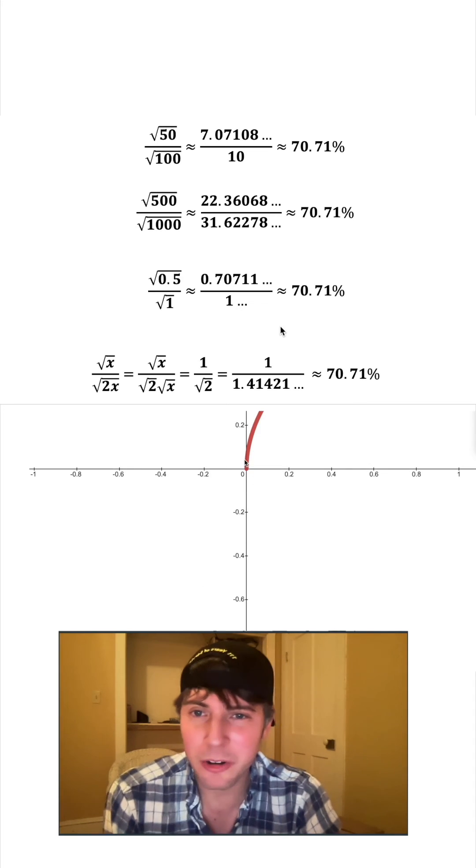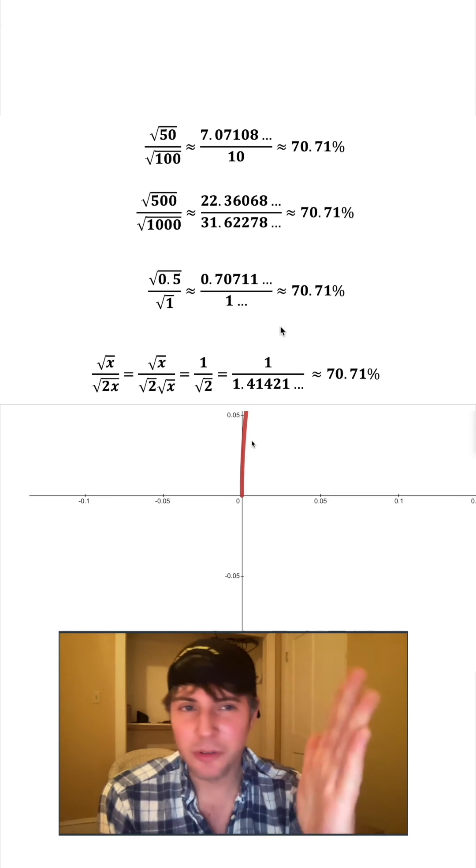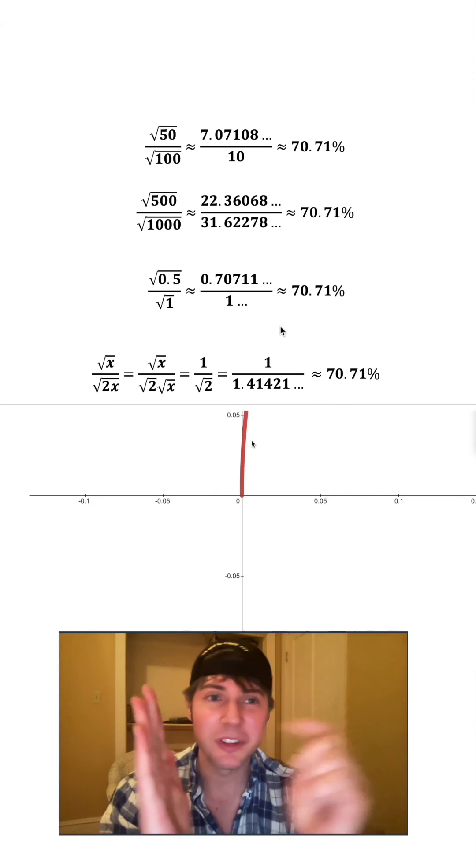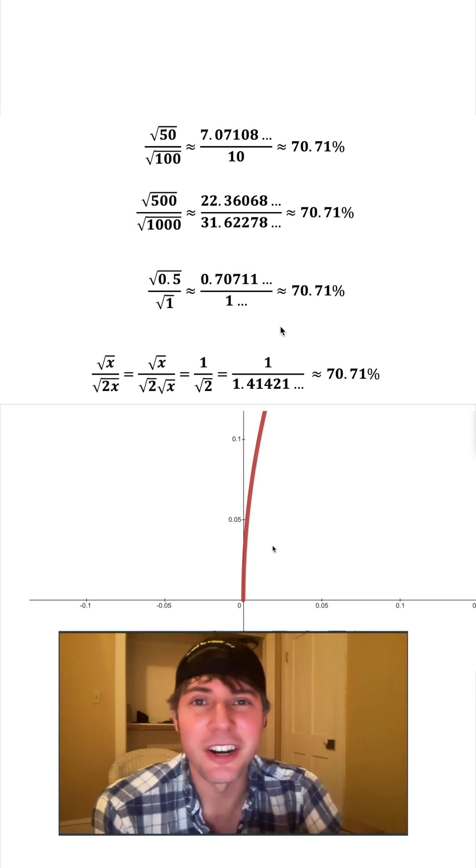So it doesn't matter how close we get, even though this looks steep. If we take the square root of some number and the square root of half that number, that other number is always going to be 70.71 percent. Pretty crazy, huh?